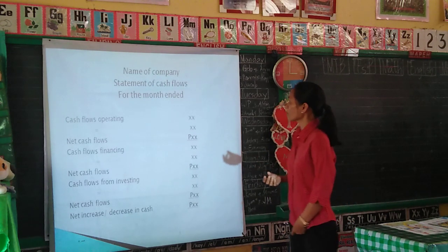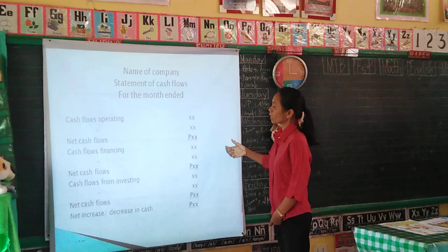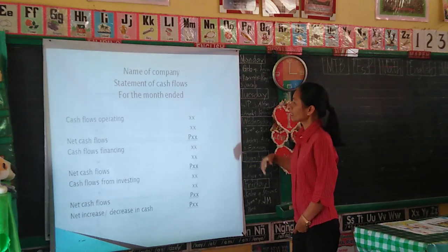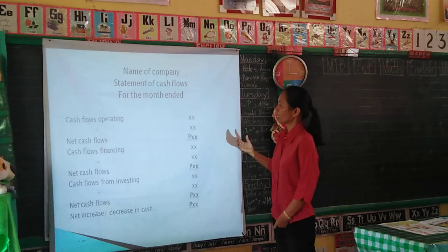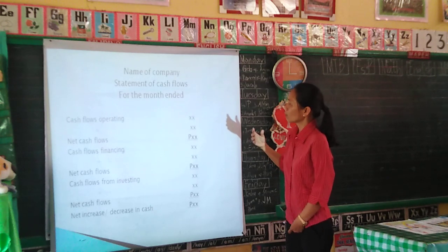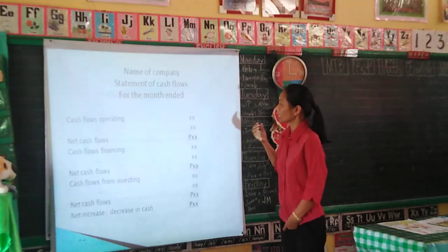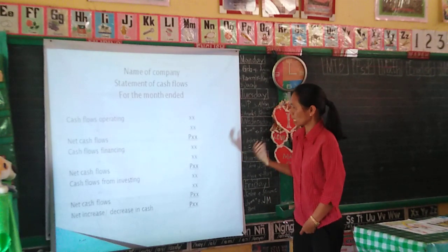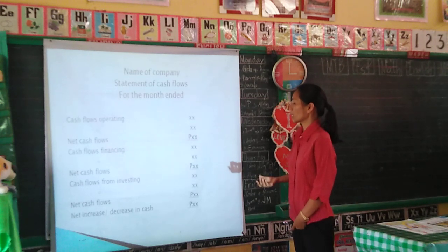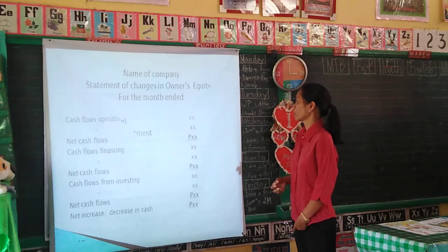Next is the statement of cash flows. In this statement, you can see the cash movements of the business. It is divided into cash flows from operating activities, financing activities, and investing activities, showing the increase or decrease in cash.